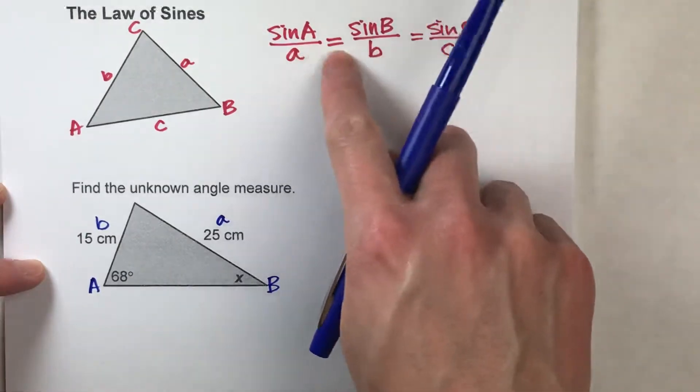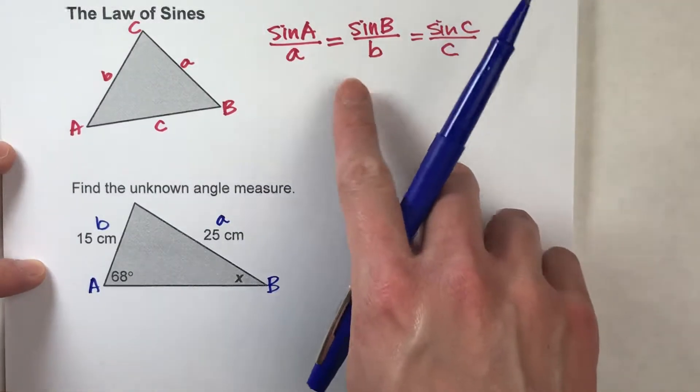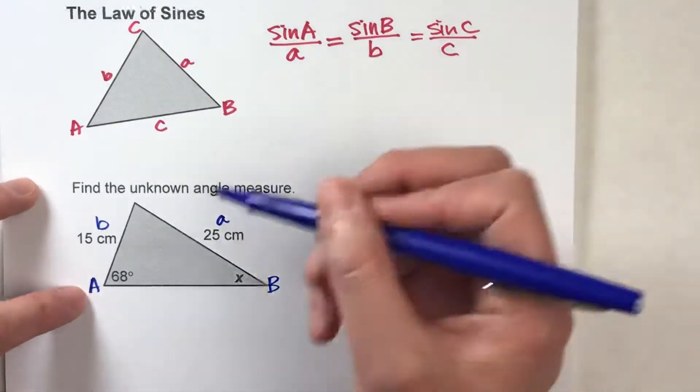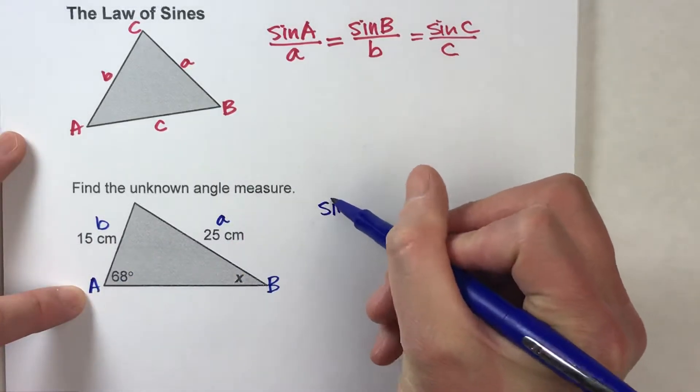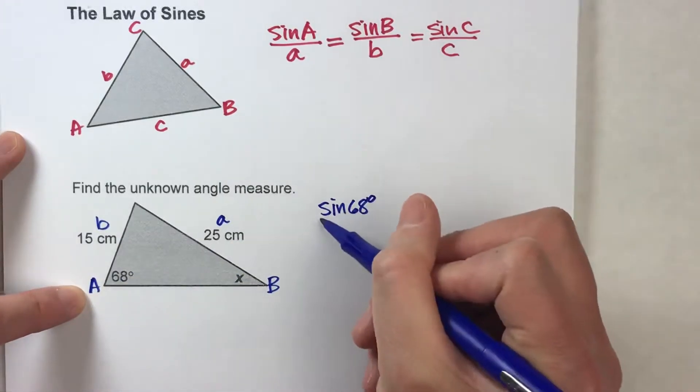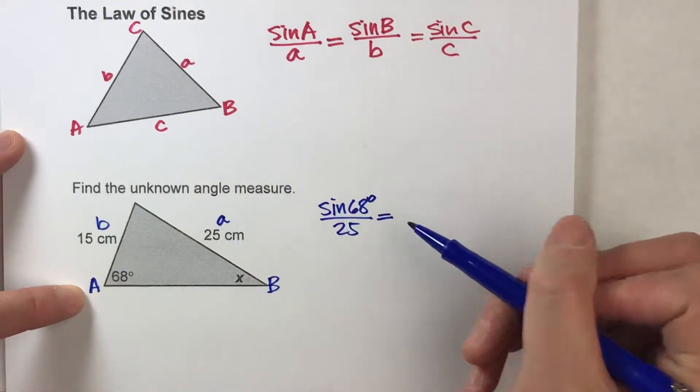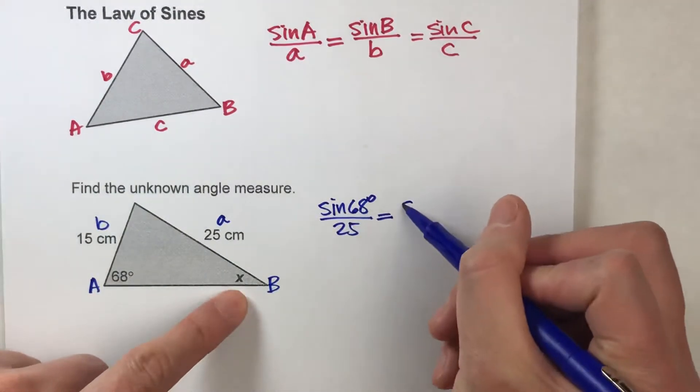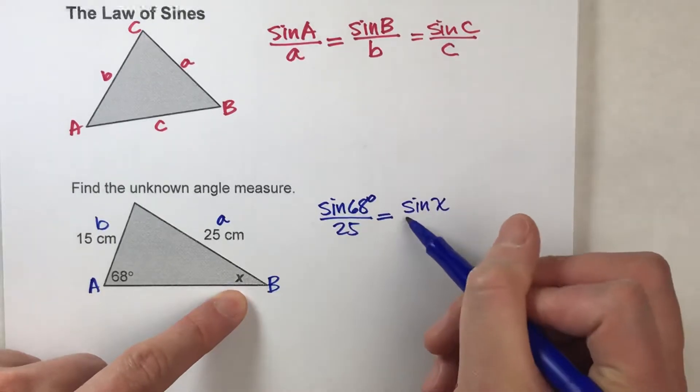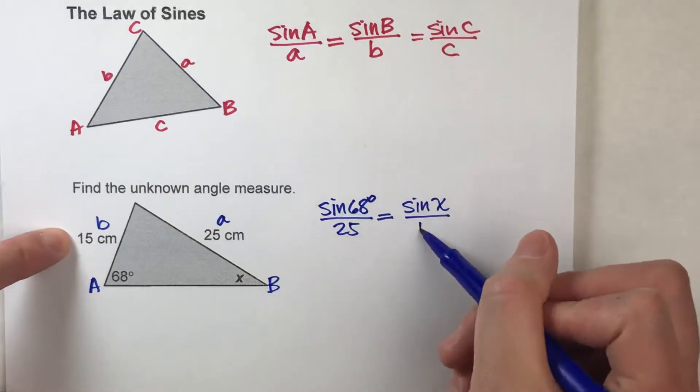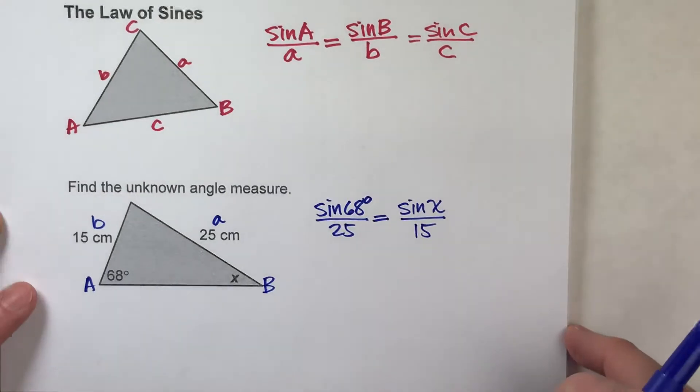So, we can use these two parts of our law of sines formula to write an equation. So, the sine of 68 degrees, divided by the side length across from it, is equal to the sine of x, divided by the side length across from it.